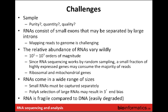Since RNA sequencing works by random sampling, the most highly expressed things get sequenced very readily, while lowly expressed things are harder to sequence because you have to randomly pull out reads corresponding to those rare transcripts many many times.